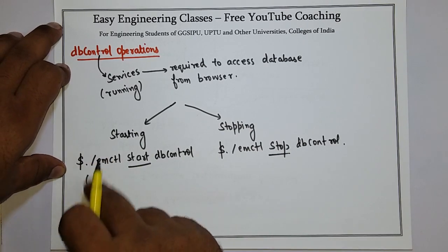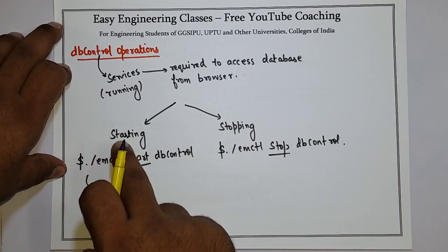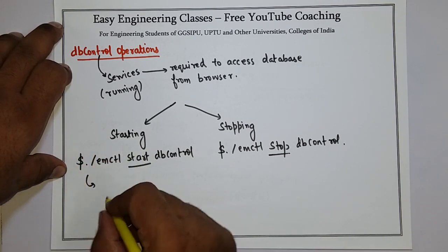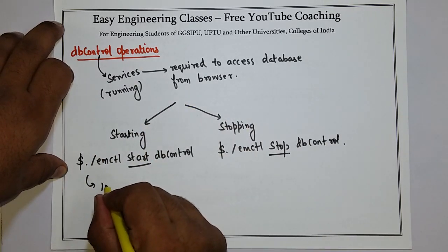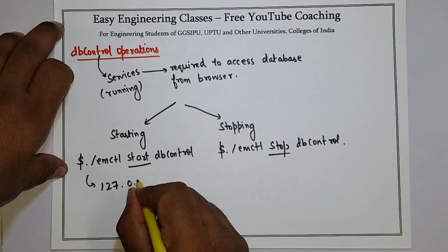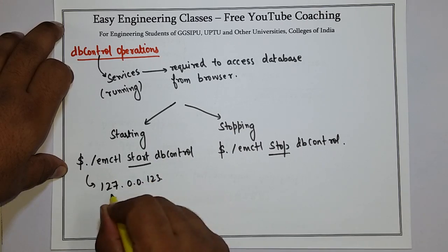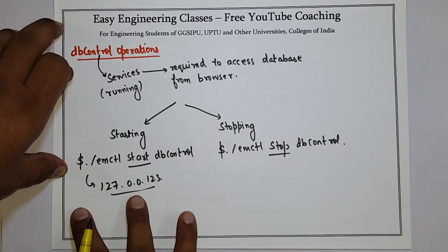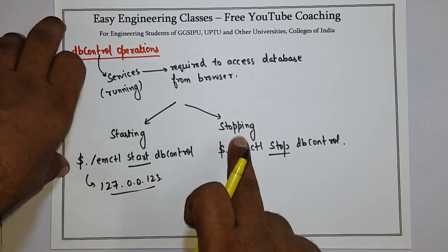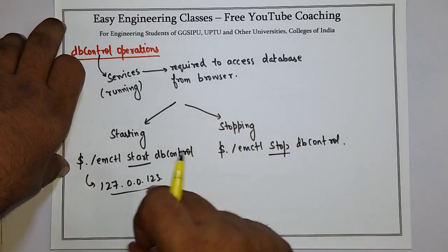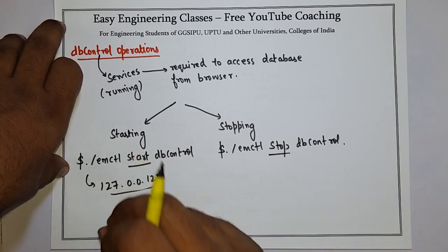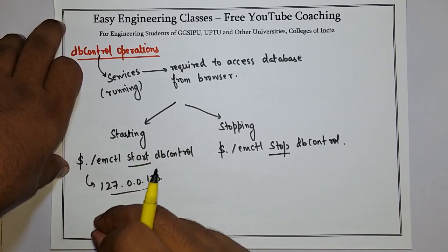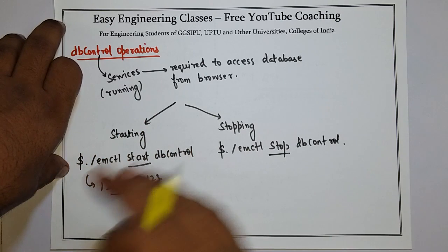Once you run the start command, the DB Control service will get started and you can access your database from the browser by typing a particular URL, something like 127.0.0.1 or similar. When you run the stop command, the DB Control service will stop and the browser will not respond to the requests that you made to access the database.